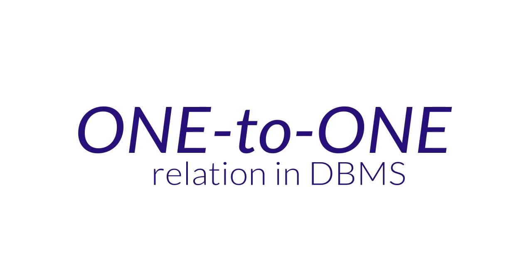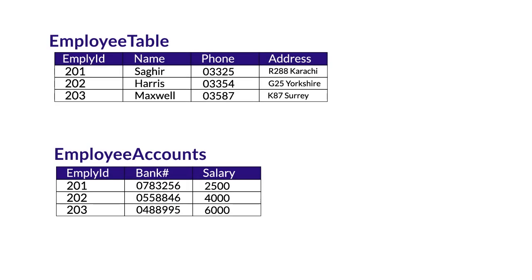One-to-one is the least used relationship in database tables, but it is important. It can be best explained with the example of an employee table and employee account table. One employee can have only one bank account, and one bank account can only be related to one employee — that's a one-to-one relationship. Another example: one student can have only one student ID, and one student ID can only belong to one student. Although this is rare, when a one-to-one situation occurs, there is a tendency among database developers to merge the two tables.